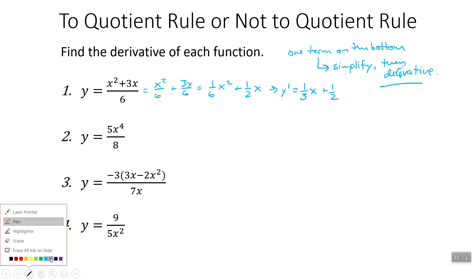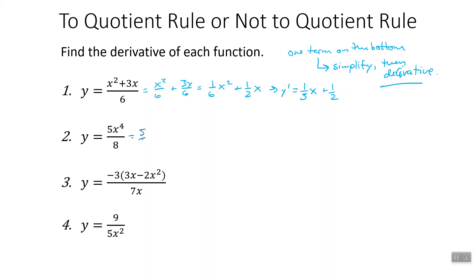Next example: we're just over one number, so we don't want to do a quotient rule. We can say this is five eighths x to the fourth, and then take the derivative. y prime: bring down the 4, so we get five eighths times 4x to the third. The 8 and the 4 cancel to leave a 2 on the bottom, so we get five halves x to the third. There's our answer.